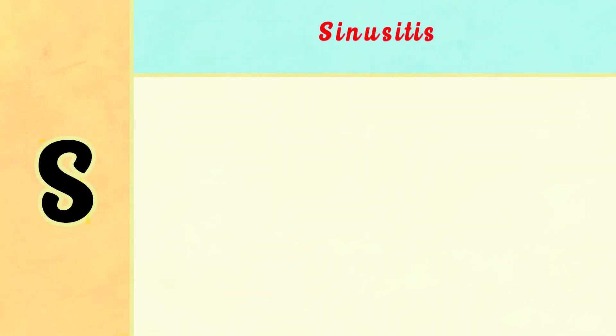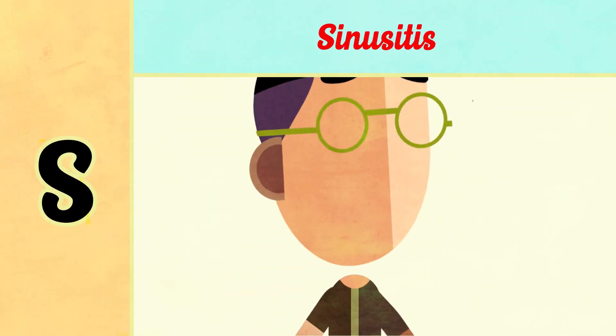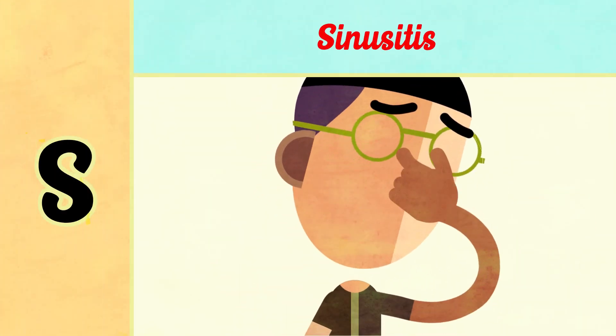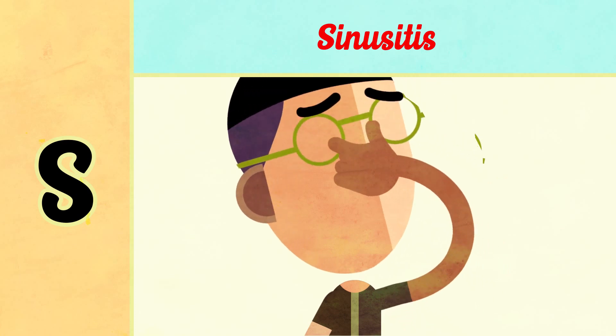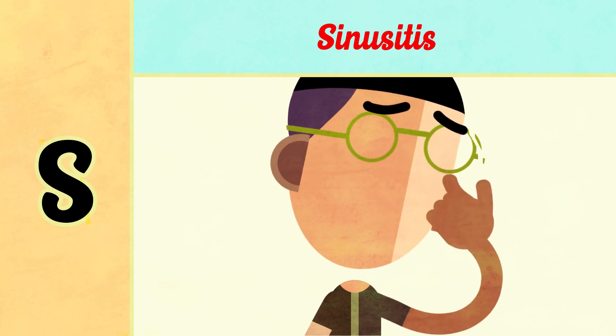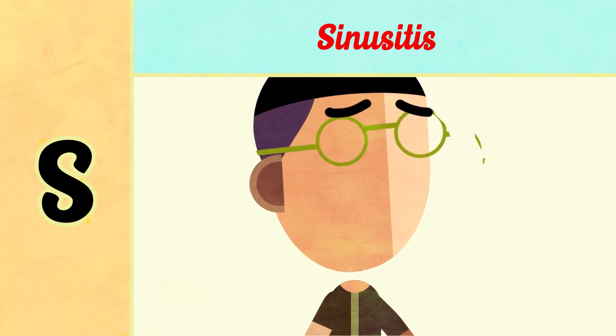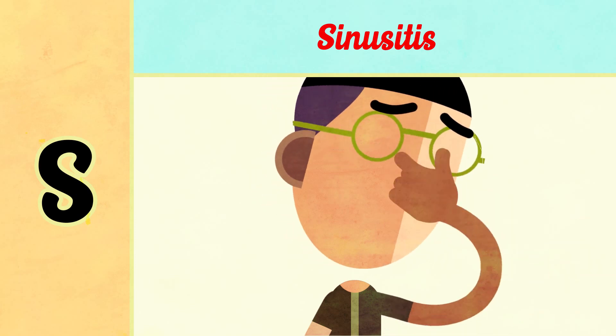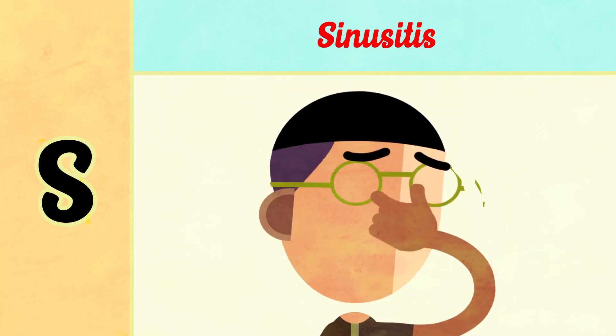S is for sinusitis. Since all sinuses have only one opening, and that's in the lateral wall of the nose, DNS causes obstruction of these openings due to nasal obstruction.